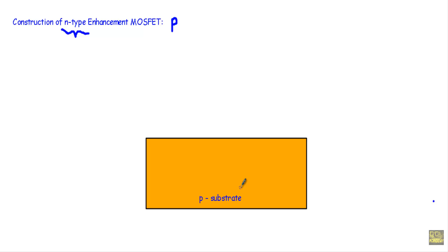As we have to construct an n-type enhancement MOSFET, at first we take a substrate which is the foundation of the MOSFET structure. We take a p-type substrate, which is a semiconductor structure obtained by doping a silicon structure with trivalent impurities. After taking this p-type substrate, we take two heavily doped n-type regions inside this structure. We usually indicate the heavily doped region with n-plus, meaning the doping concentration in this region is very high.